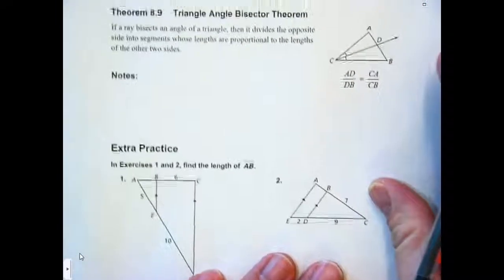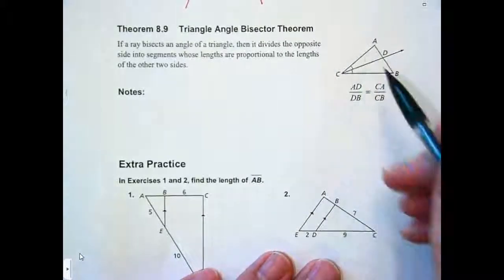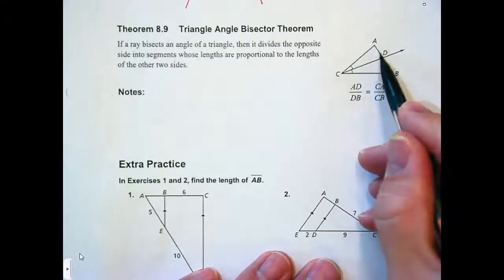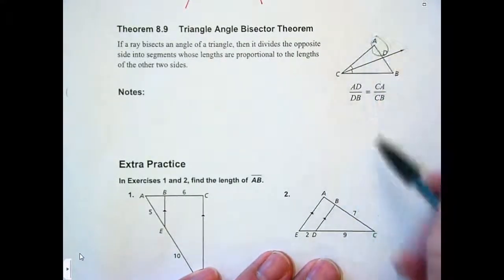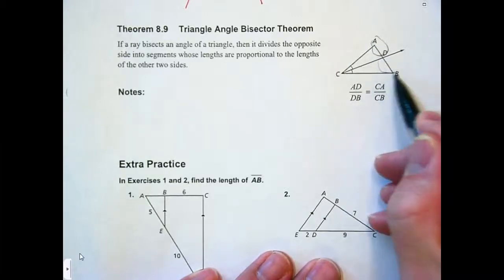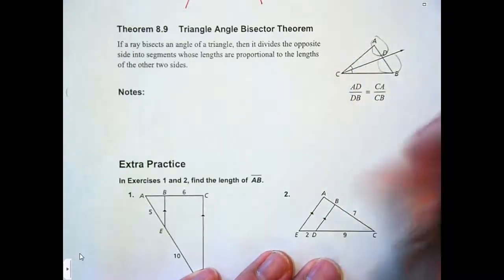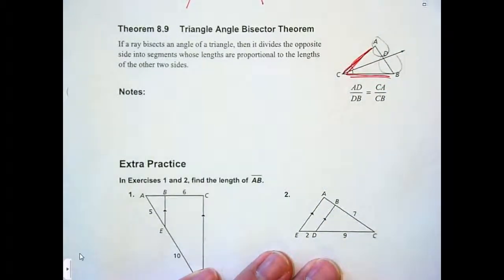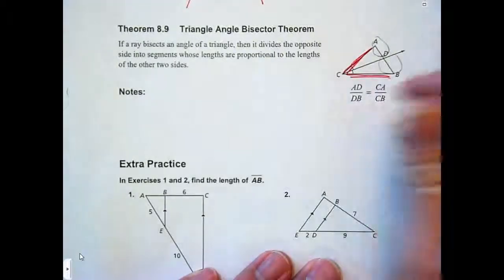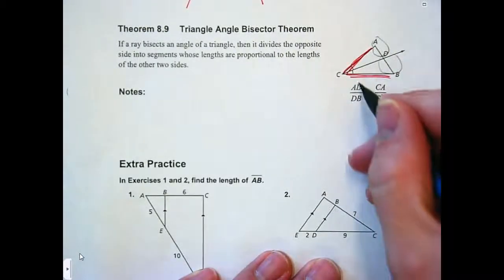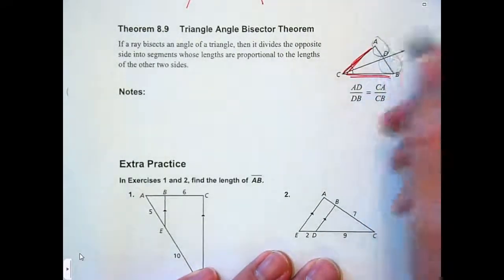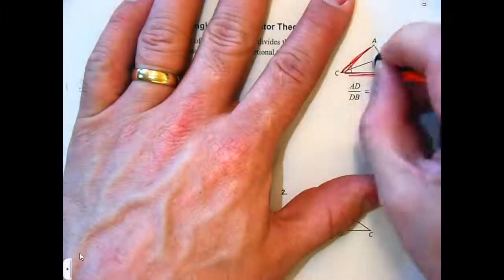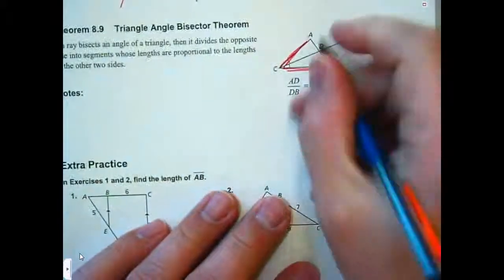This next one. I actually compare mine differently. But this one is saying AD, so it's saying this, is to DB, which is that, as CA is to CB. That's a proportion. Sometimes it's helpful rather than having the multiple letters to kind of do what we did here. Just label them A, B, C, and D.